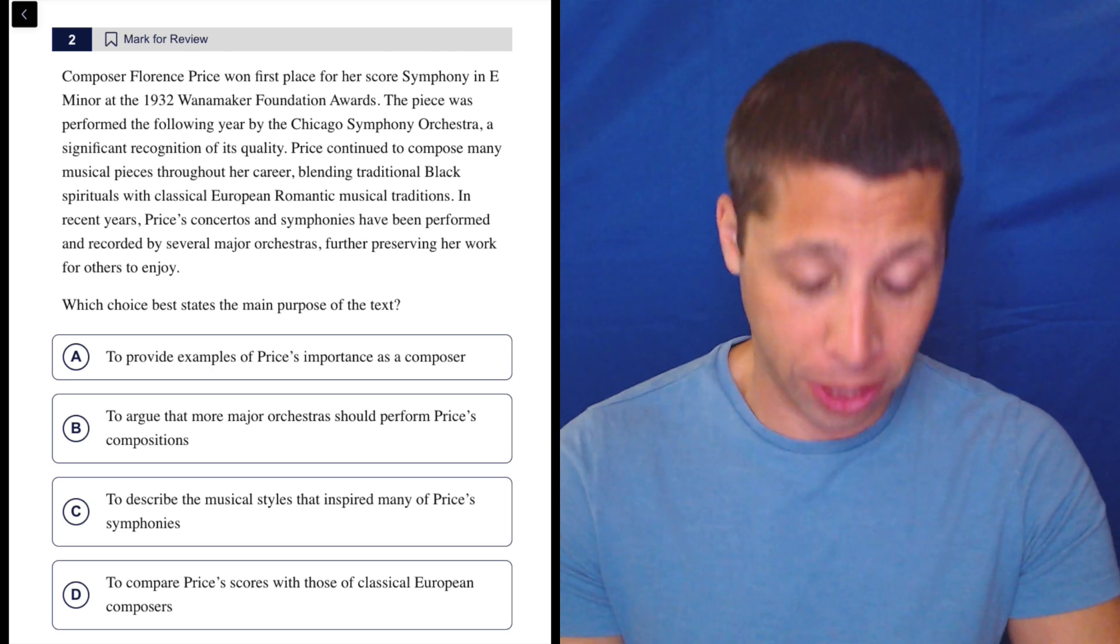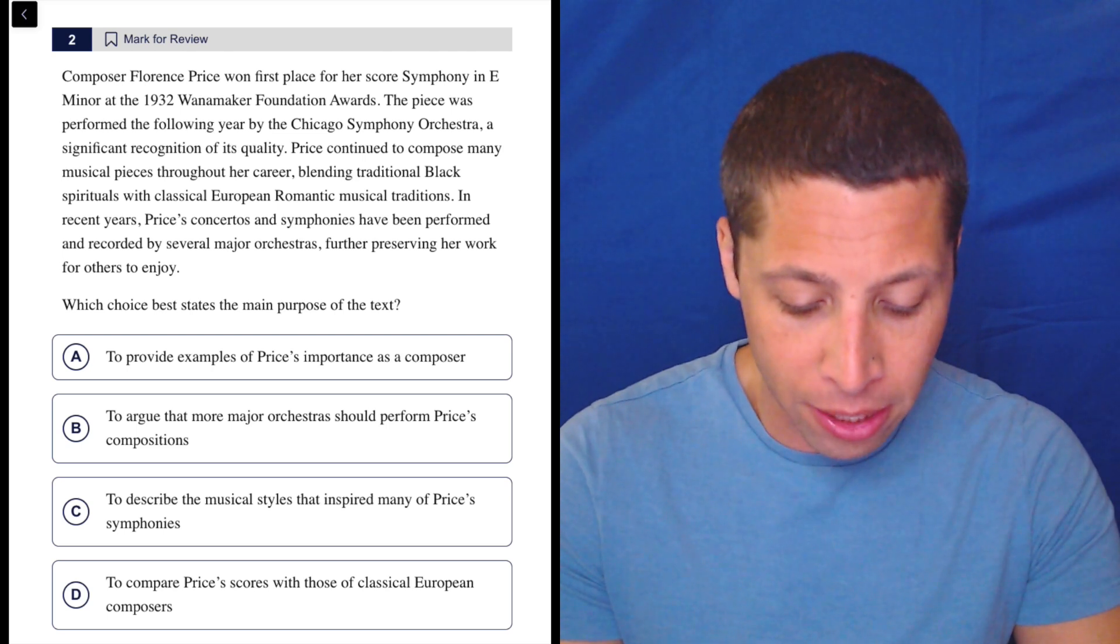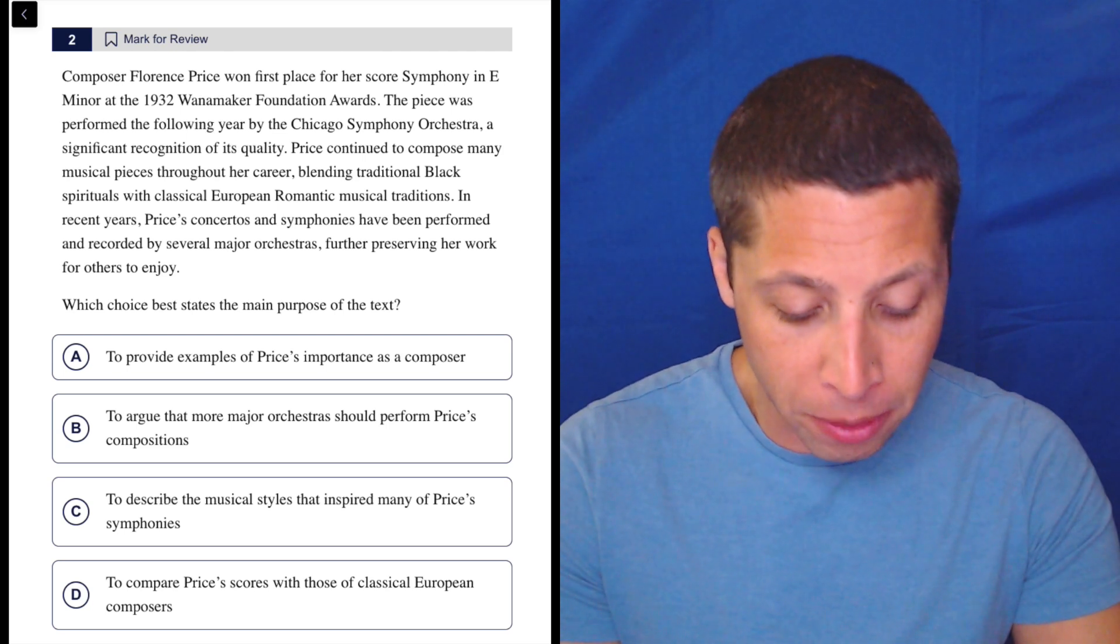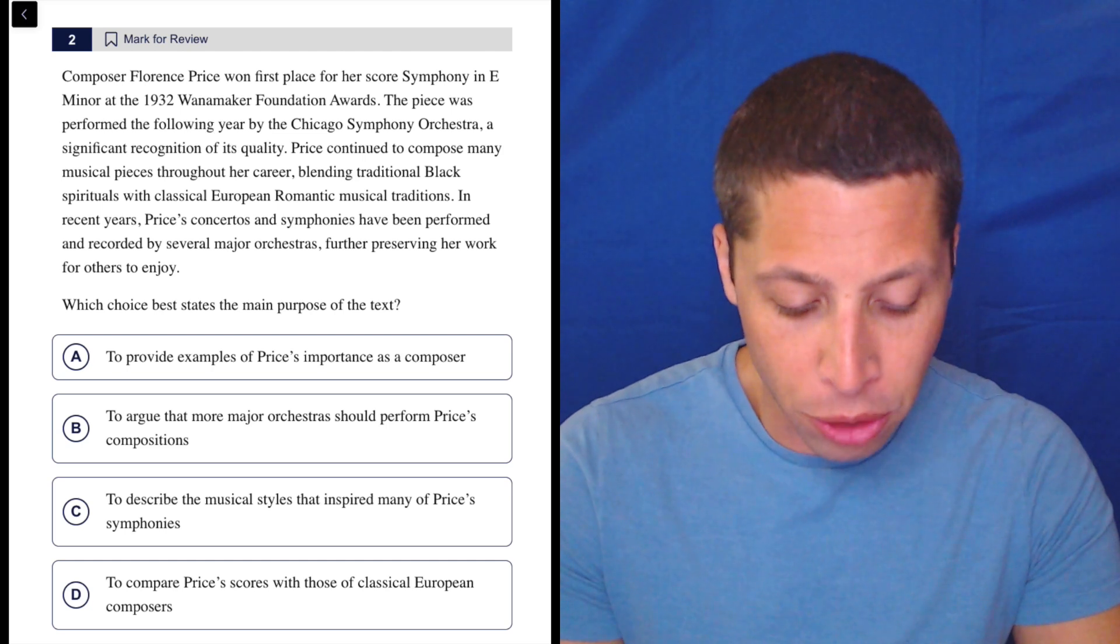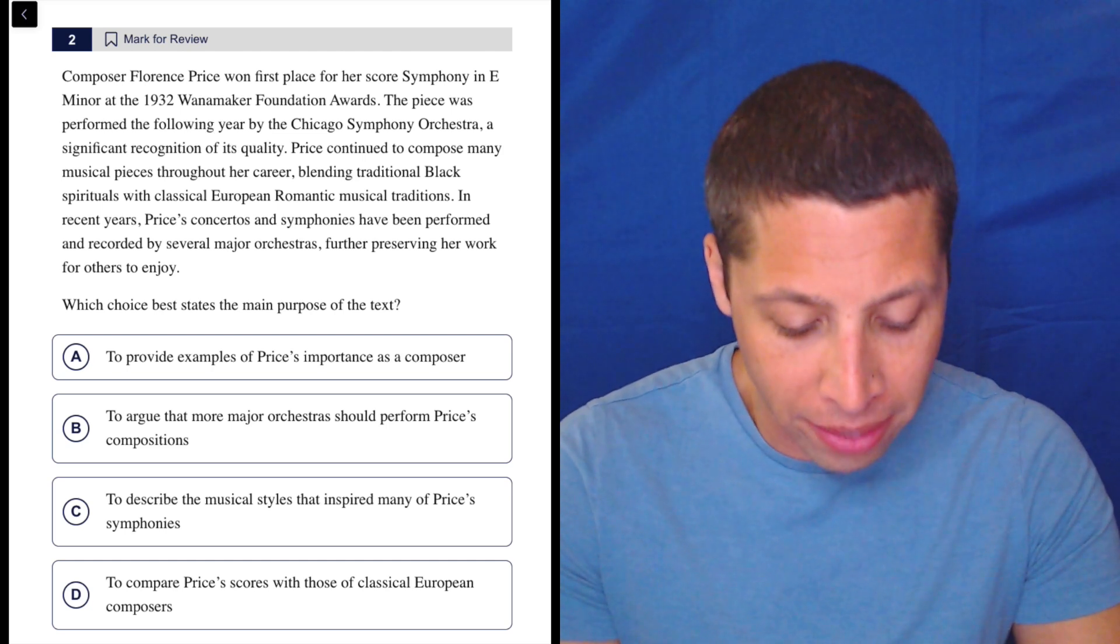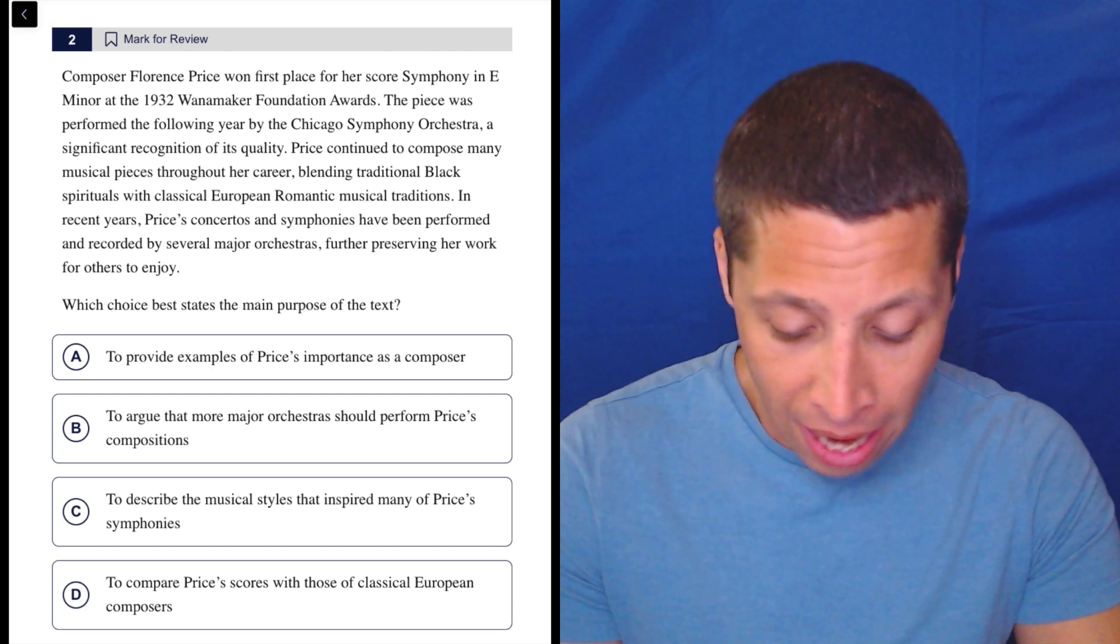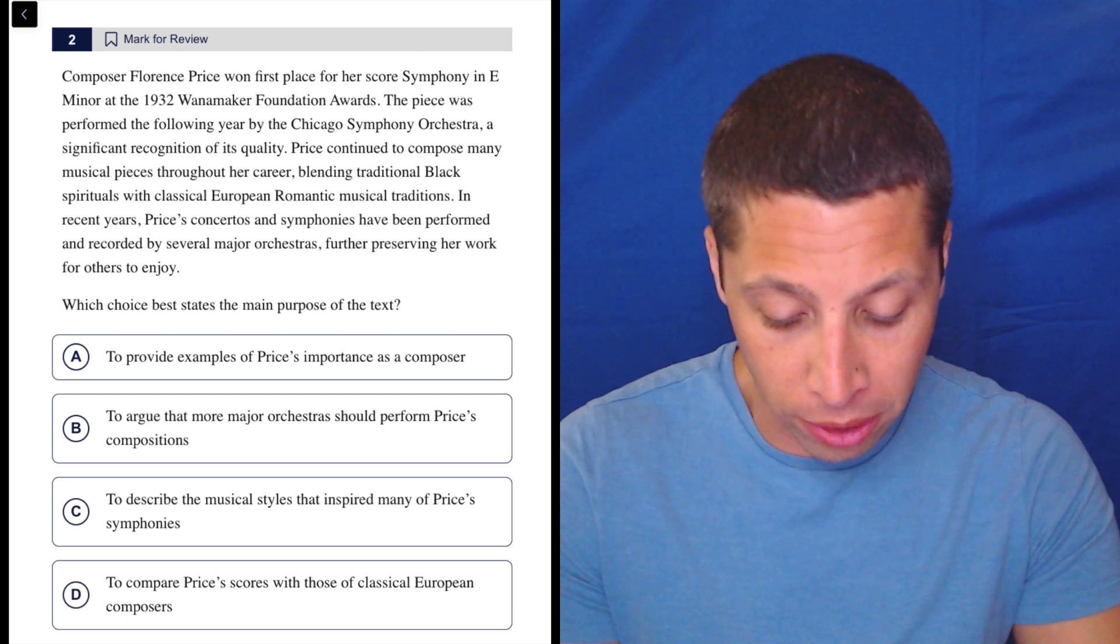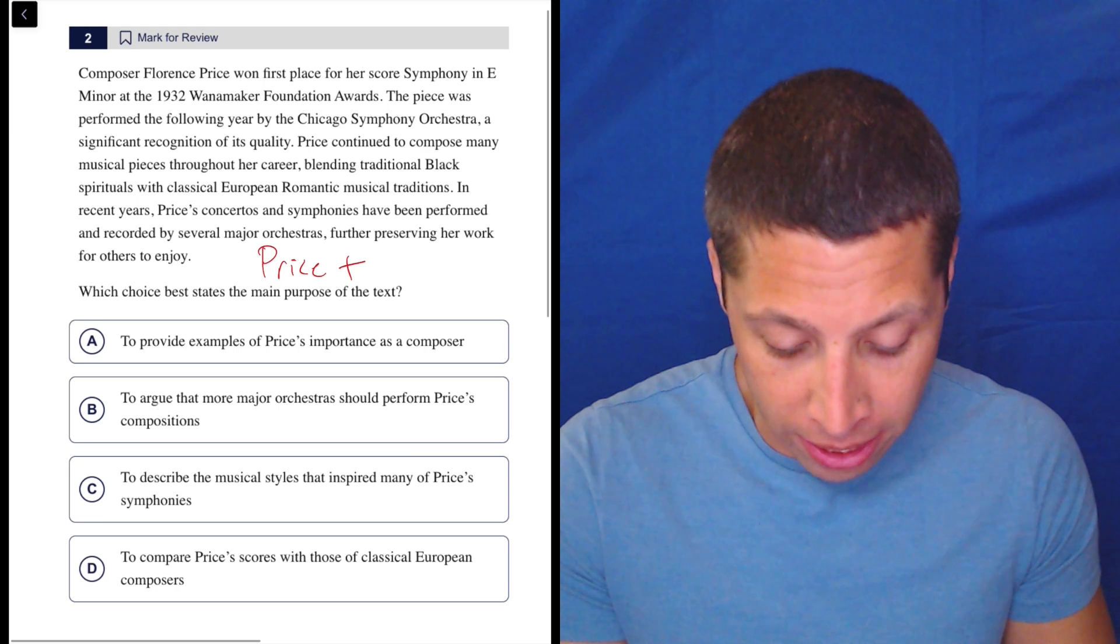Let's let the choices tell us what to care about. Composer Florence Price won first place for her score, Symphony in E Minor, at the 1932 Wanamaker Foundation Awards. This piece was performed the following year by the Chicago Symphony Orchestra, a significant recognition of its quality. Price continued to compose many musical pieces throughout her career, blending traditional black spirituals with classical European romantic musical traditions. In recent years, Price's concertos and symphonies have been performed and recorded by several major orchestras, further preserving her work for others to enjoy. So basically, Price is good. That's all I get here. That's all you need to care about.